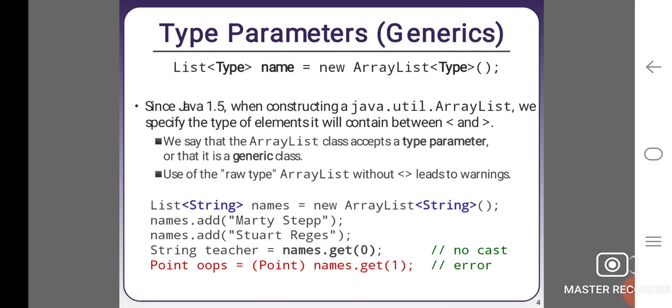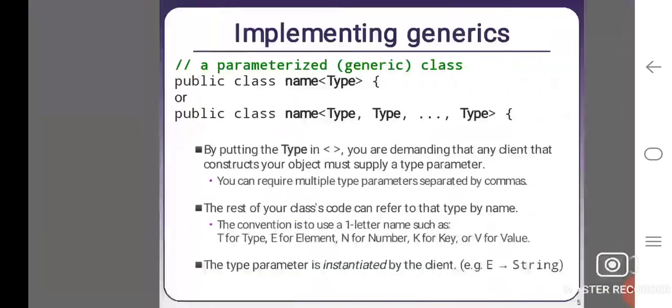Use of the raw type ArrayList without open and close tag leads to warnings. List<String> names = new ArrayList<String>(); names.add("Marty Stepp"); names.add("Stuart Reges"); String teacher = names.get(0); - here no casting. Point oops = names.get(1); - here the error has occurred.